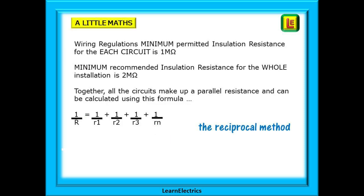We need to look at some simple maths now. This is basic Ohm's law and is easily followed. The wiring regulations tell us that the minimum permitted insulation resistance for each circuit is one megaohm — one million ohms. But the minimum recommended insulation resistance for the whole installation is two megaohms — two million ohms. Together all the circuits make up a parallel resistance, and this can be calculated using the formula: 1/R = 1/R1 + 1/R2 + 1/R3 + 1/Rn and so on.